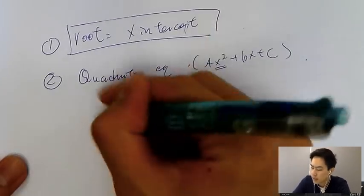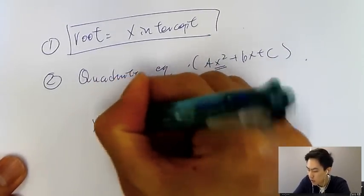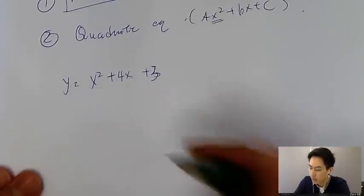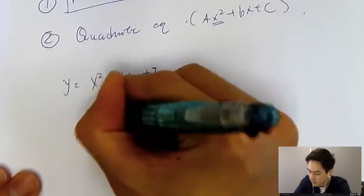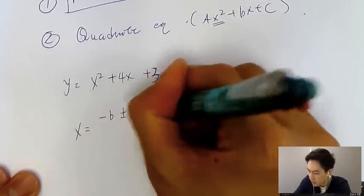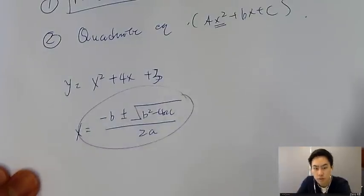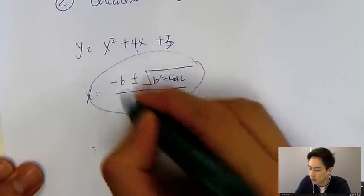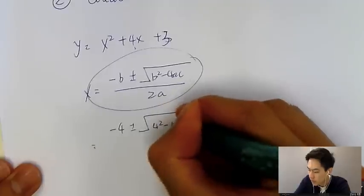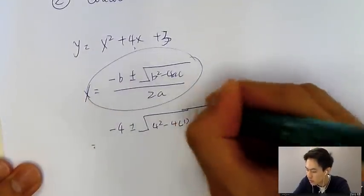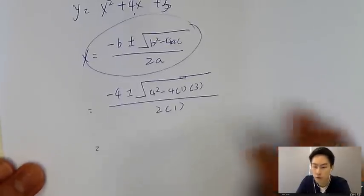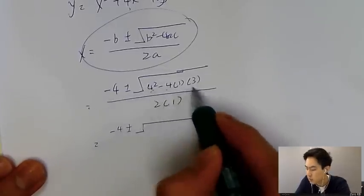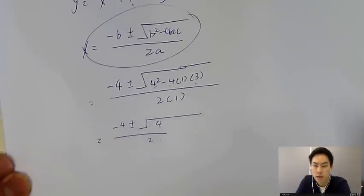Let's say we have x squared plus 4x plus 3. How do you solve this using the quadratic formula? We know x equals negative b plus or minus the square root of b squared minus 4ac, all over 2a. For this equation, it becomes minus 4 plus or minus the square root of 4 squared minus 4 times 1 times 3, over 2. That simplifies to minus 4 plus or minus the square root of 16 minus 12, which is the square root of 4, over 2.